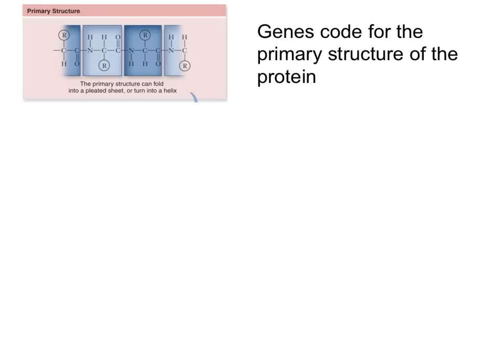However, the sequence of the amino acids is only the beginning of the structure of a protein. So the amino acid order, or the amino acid sequence, is what we call the primary structure. So this is the very basic, or the very beginning, in the making of a protein. So once you have the primary structure — just the order of the amino acids — then the protein starts to fold.